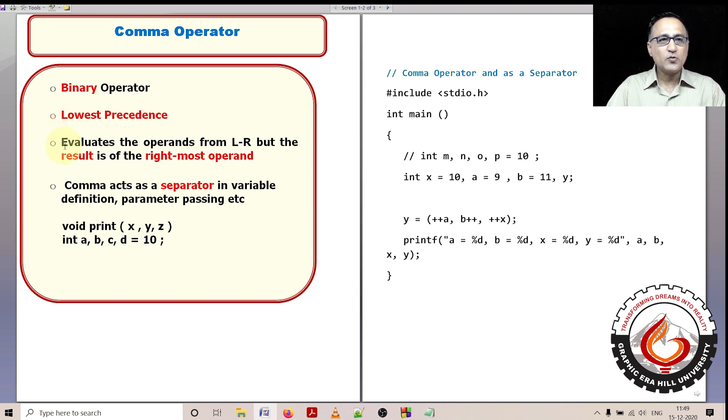But the most important thing you need to understand is the comma operator evaluates the operands from left to right, but the result of the evaluation is the value of the rightmost operand. This will be clear when I solve the example on the right side.